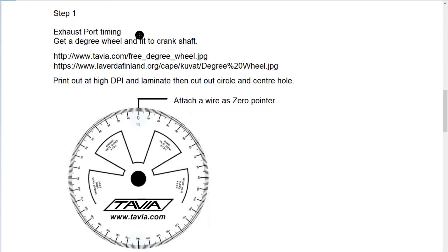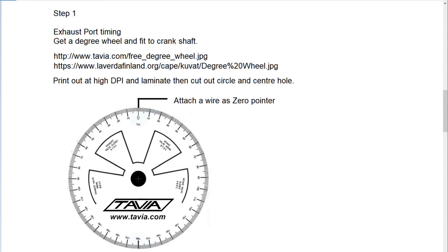The first step is exhaust port timing using a degree wheel, which you can download — there are two links shown here, the bottom one is actually the better one but either works. Print it out in high resolution, making sure it's not too big. A good idea is to laminate it and then cut around the outside of the circle edge so it's a little stiffer. Put the center in, bolt it on to one side of the crankshaft, then find a piece of wire to use as a pointer — attach it to a fin or bolt with a small vice grip — and point it down.